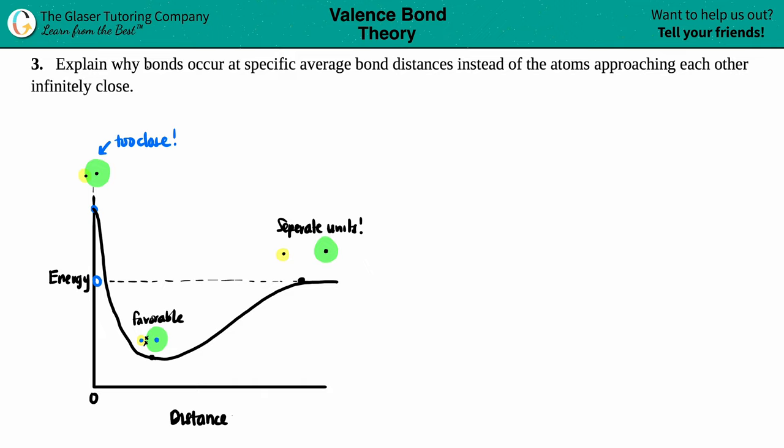Number three, explain why bonds occur at specific average bond distances instead of the atoms approaching each other infinitely close.